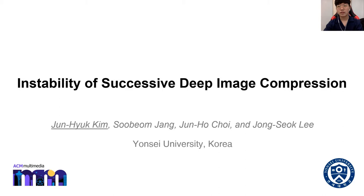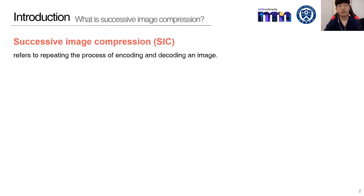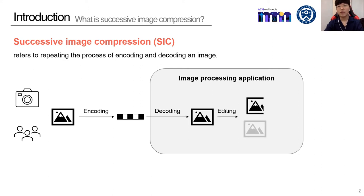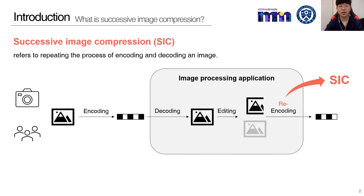Let's start with the definition of successive image compression. In this paper, it means repeating the process of encoding and decoding an image, which occurs in various applications. Consider the case of an image processing application. It first decodes an encoded image taken by a camera or shared by another user. Then, it performs image manipulation like cropping. Finally, it re-encodes the manipulated image, and this process implicitly involves successive image compression.